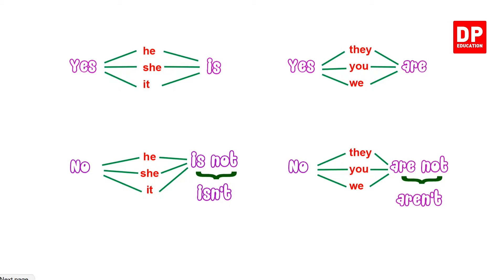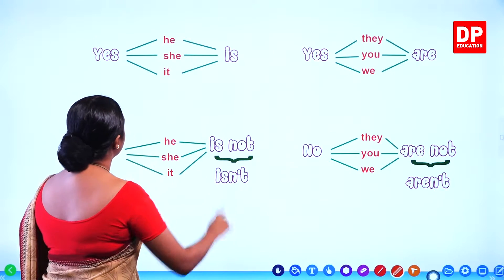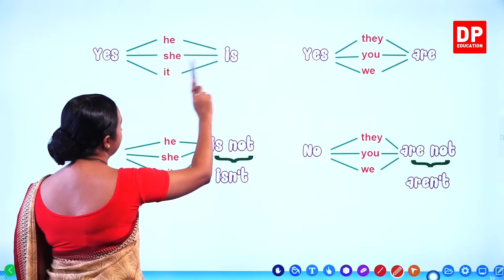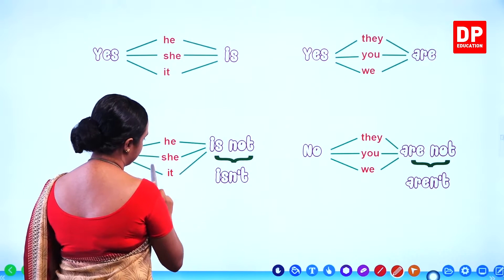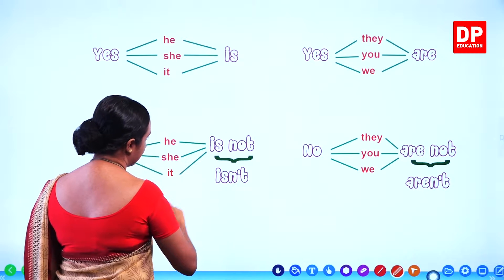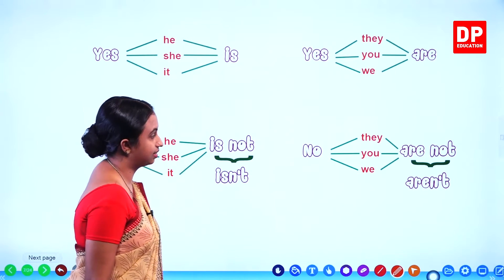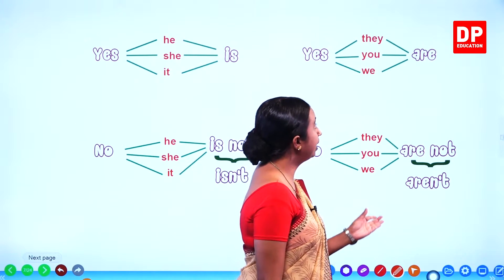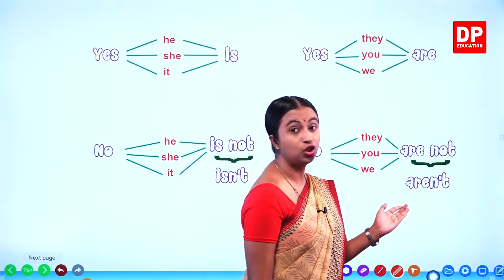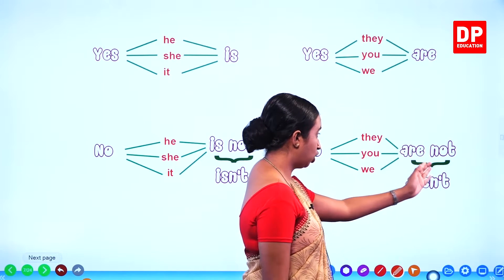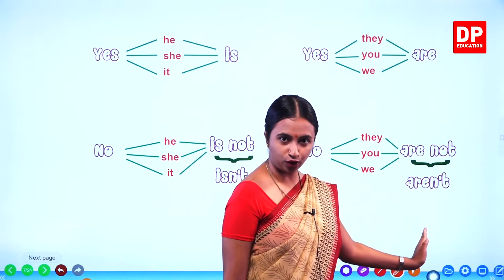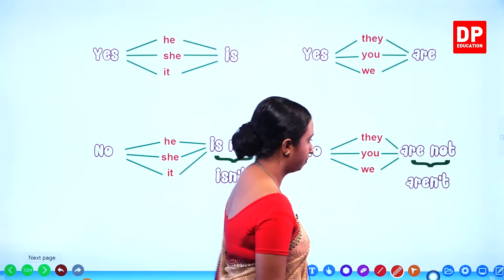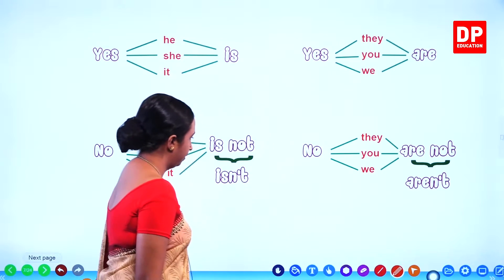So, in that way, we are going to get the message. He is, she is, it is. He is not — isn't. She is not — she isn't. It is not — it isn't. What are they doing? They are. You are. We are. They are not. You are not. We are not. 'Are not' in the short form is 'aren't.'